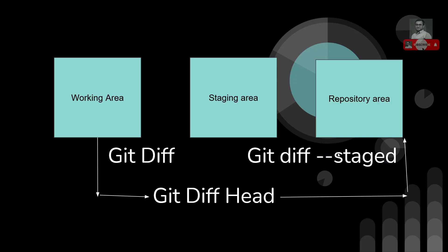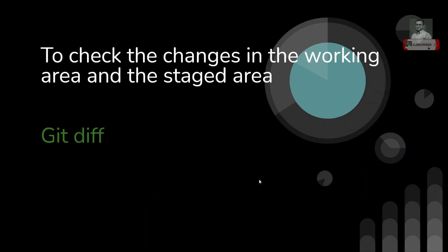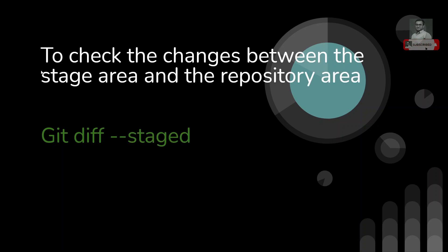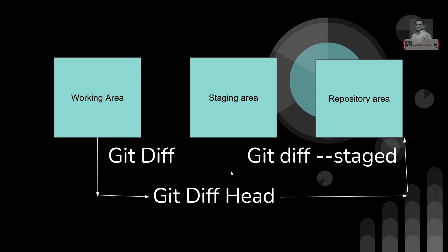So these are the three diff commands: `git diff` for working area vs staging area, `git diff --staged` for staging area vs repository area, and `git diff HEAD` for working area vs repository area. Let's now see these in a practical demonstration.